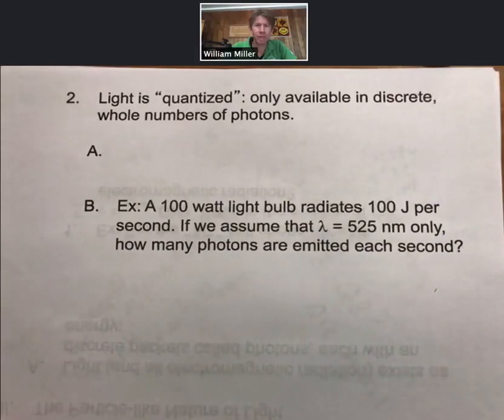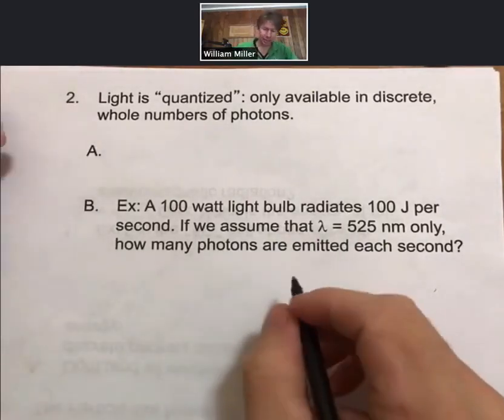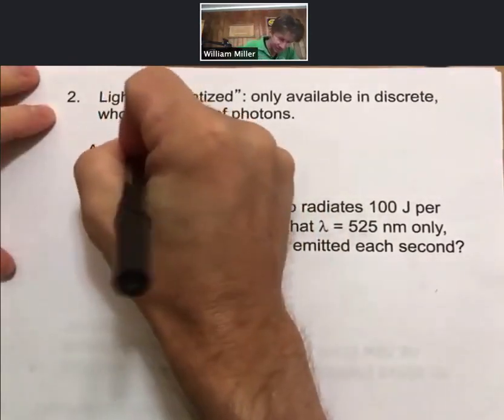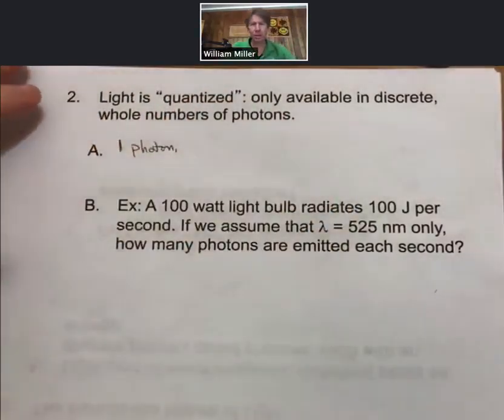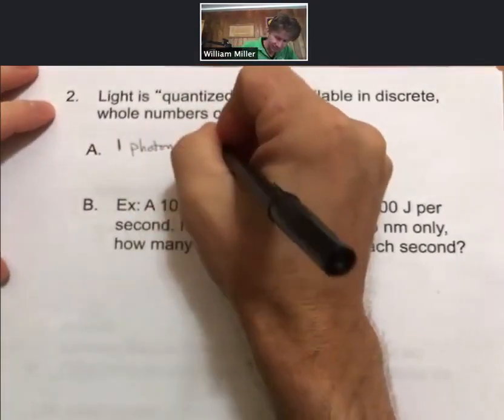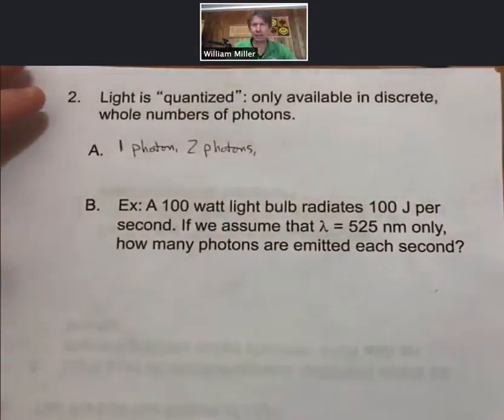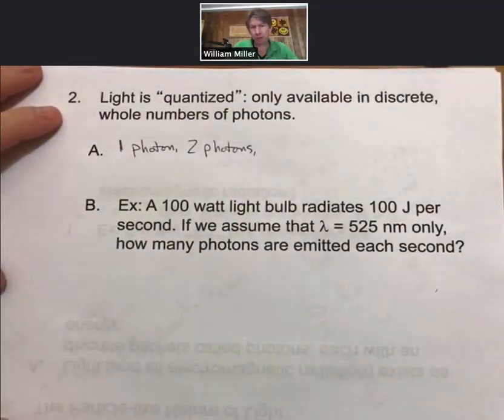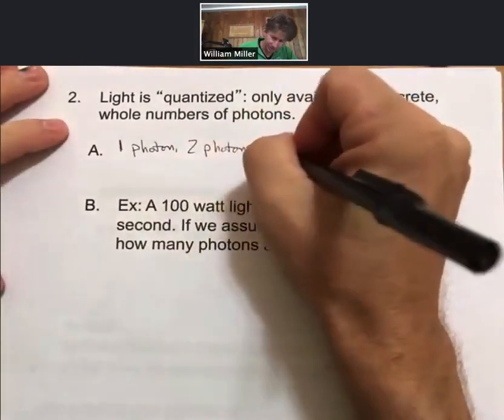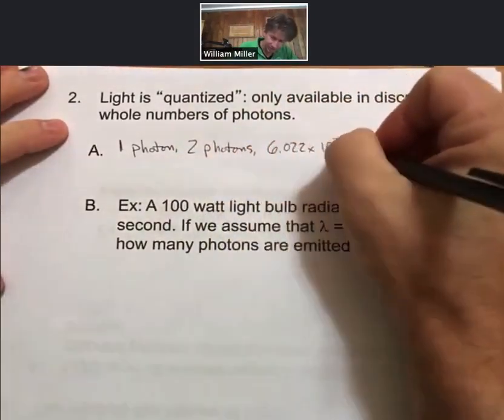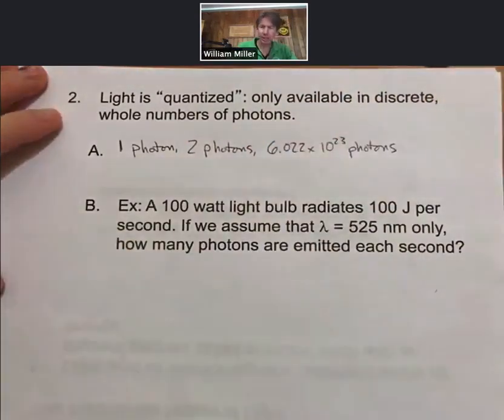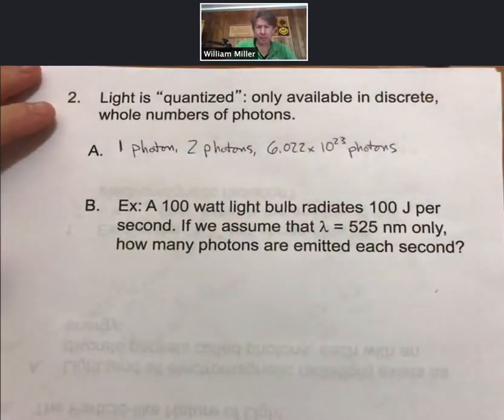Now, we've talked about photons, and we want to emphasize the quantum or quantized nature of photons. So light is quantized. They're only available in discrete, whole numbers of photons. For example, you can have one photon, you can have two photons. And, as we will see, you can have 6.022 times 10 to the 23rd photons, which, of course, would be one mole of photons.